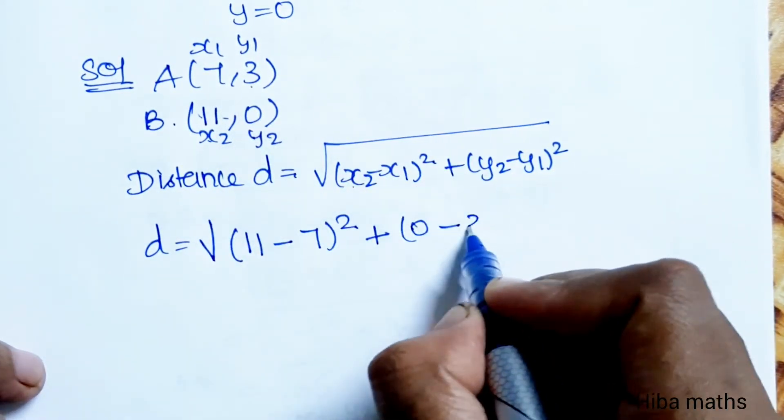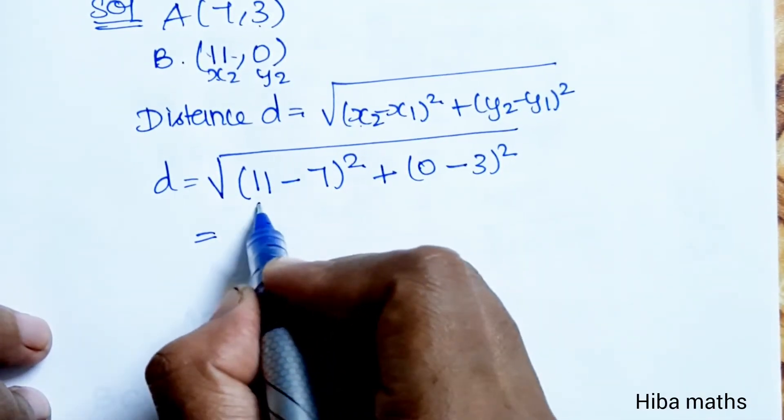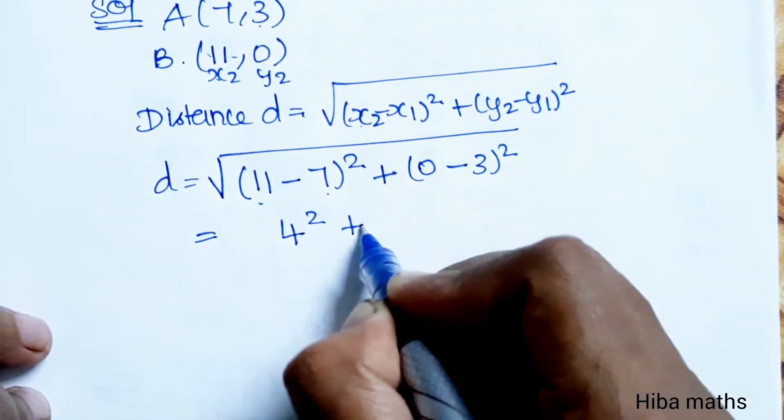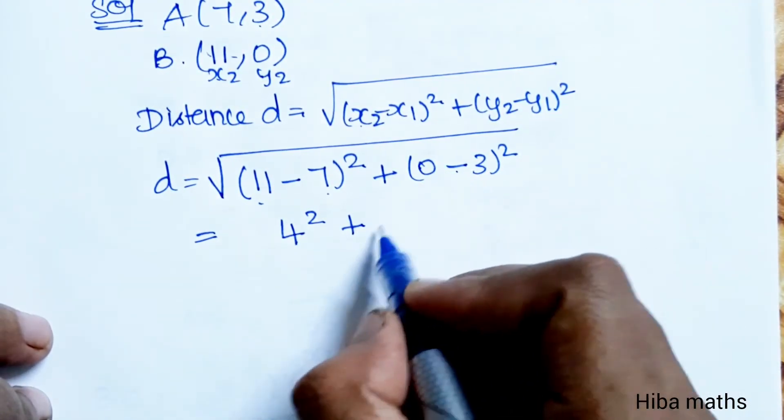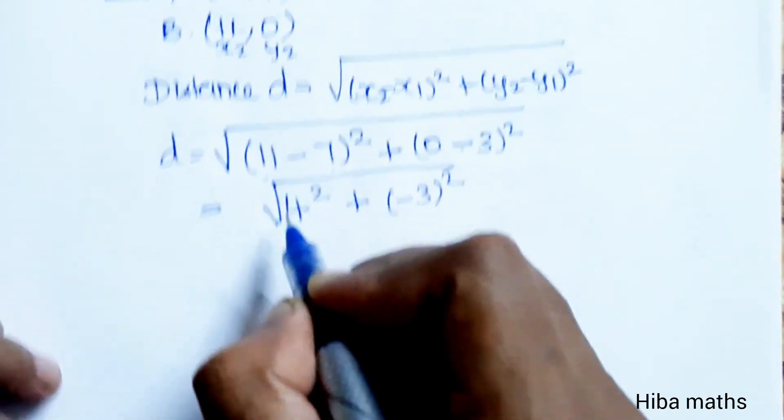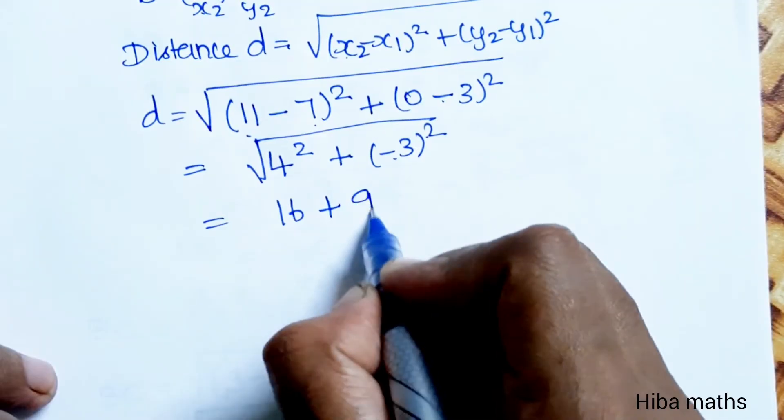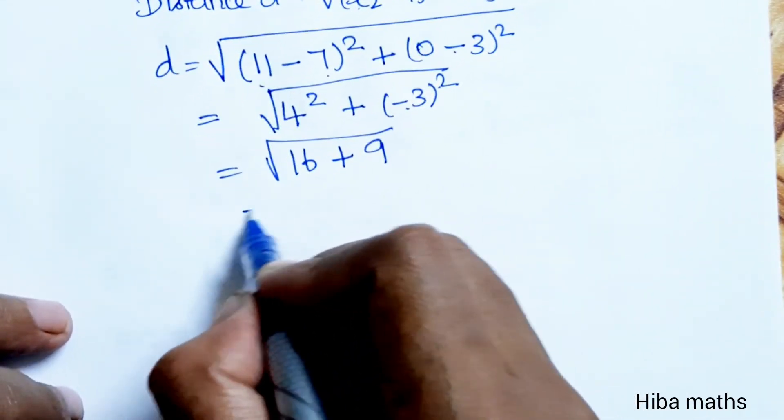That is, (11-7) is 4, 4 squared, plus (0-3) is minus 3 squared. 4 squared is 16, plus 3 times 3 is 9. 16 plus 9 is 25.